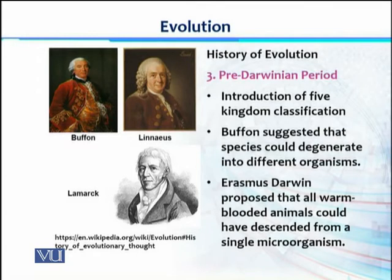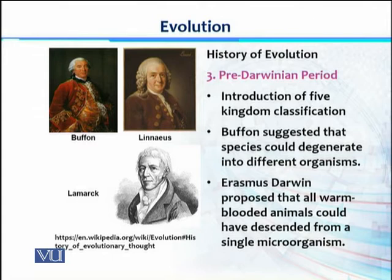Linnaeus recognized a hierarchy from simple to more complex organisms and introduced the five kingdom system, including Kingdom Monera, Protista, Plantae, and Animalia — marking the beginning of modern taxonomy. During this period, Buffon was another evolutionist who suggested that species could degenerate into different organisms, primitively giving the concept of divergent evolution: from a common ancestry, different types of species with dissimilarities could arise.